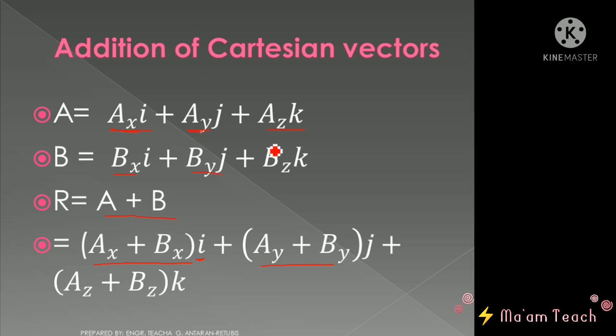Similarly for Ay and By, and Az and Bz. So if you have two or more vectors, just combine their x components, their y components, and z components. Simple as that.